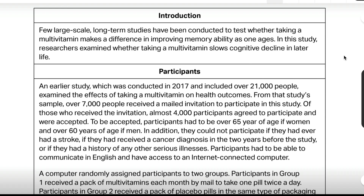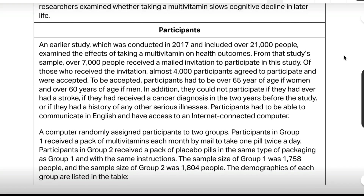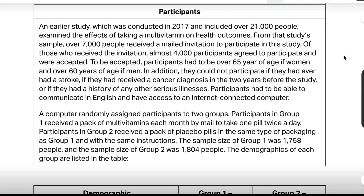Participants. An earlier study, which was conducted in 2017 and included over 21,000 people, examined the effects of taking a multivitamin on health outcomes. From that study's sample, over 7,000 people received a mailed invitation to participate in this study. Of those who received the invitation, almost 4,000 participants agreed to participate and were accepted. To be accepted, participants had to be over 65 years of age if women and over 60 years of age if men. In addition, they could not participate if they had ever had a stroke, if they had received a cancer diagnosis in the two years before the study, or if they had a history of any other serious illnesses.